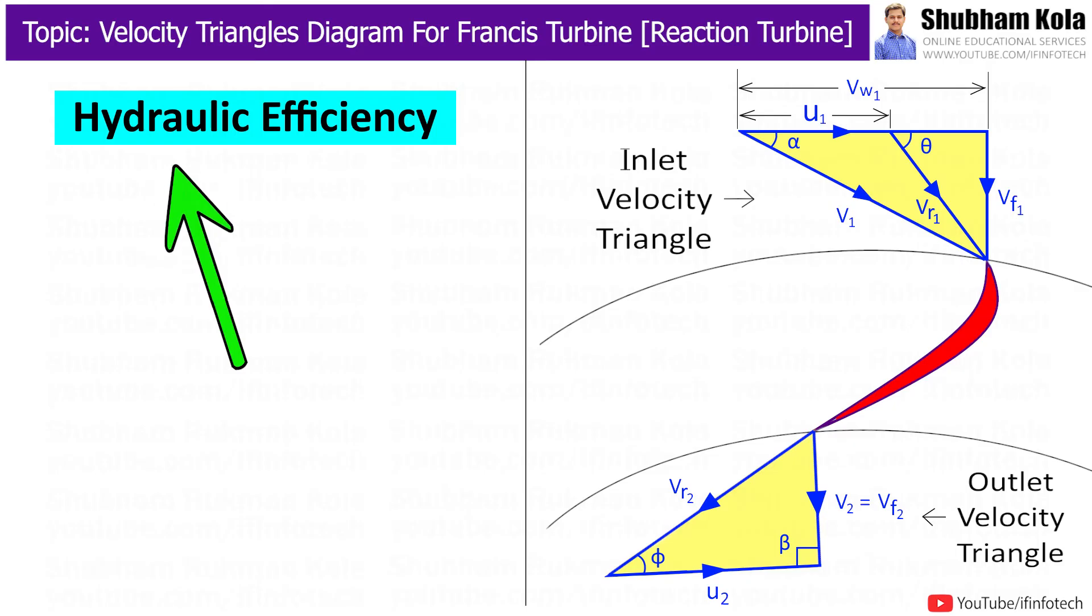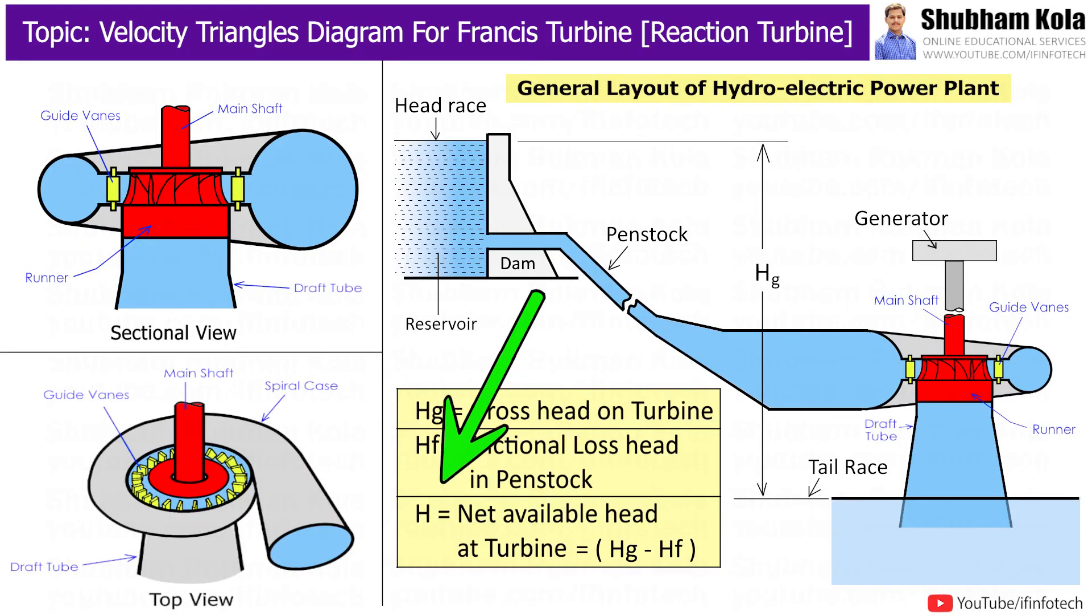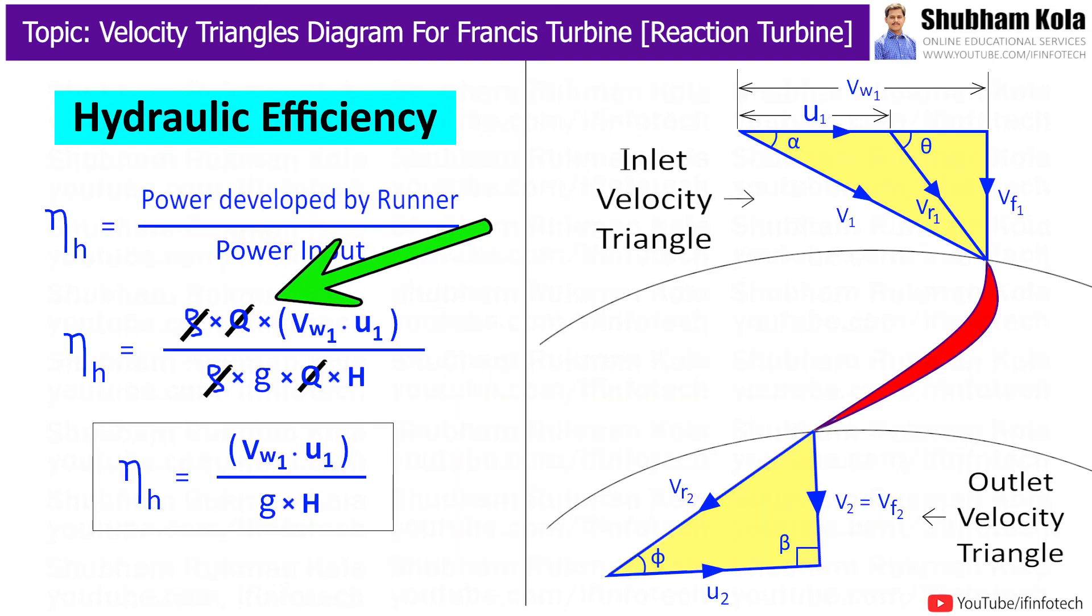Now, hydraulic efficiency of turbine is given by formula i.e. power developed by runner P divided by input power or water power. Where H is net head available on turbine. So, here rho q, rho q g cancel and we will get the formula for hydraulic efficiency of turbine.